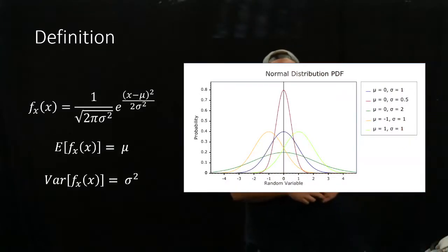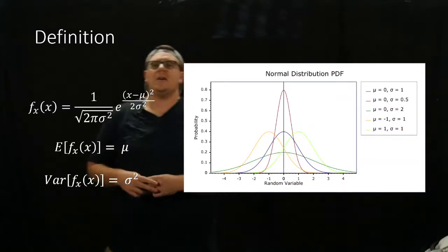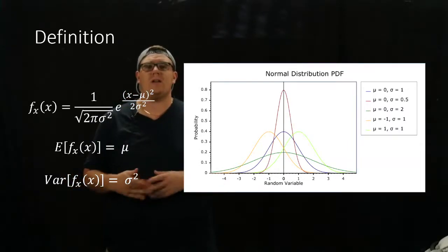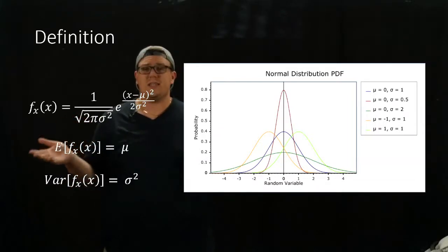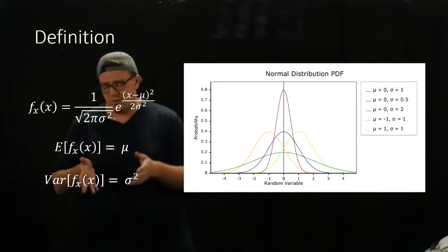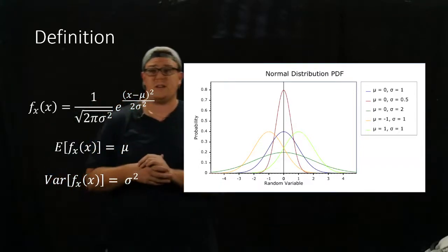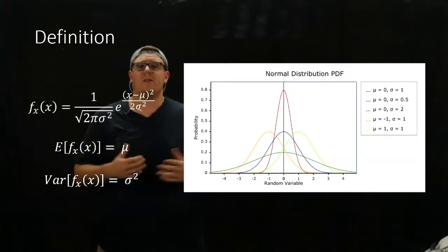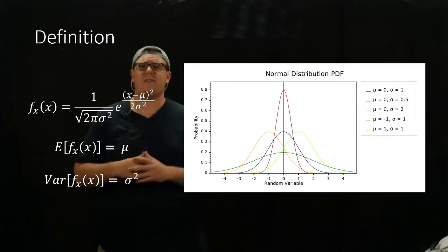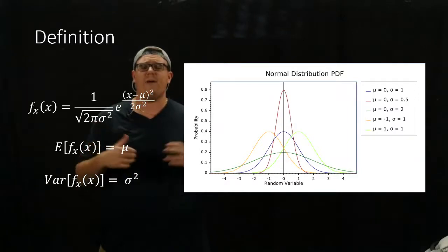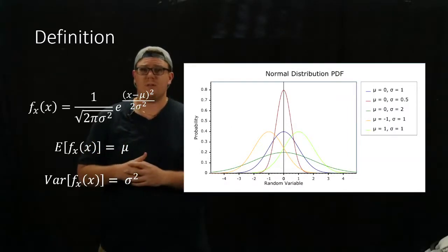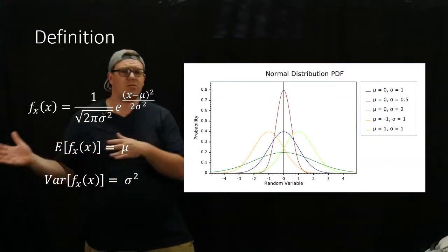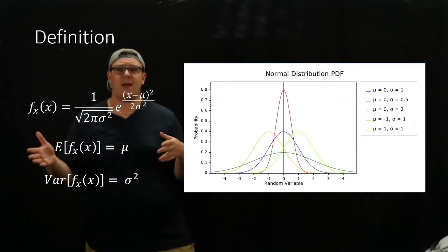This is what a normal distribution PDF looks like. We have a bunch of different ones graphed here. The blue one is the standard normal — it's what we call when it has zero mean and unit variance, or unit standard deviation. Then you have a couple of different ones for different μ's and σ's. Take some time to look at this and see how different μ's and σ's affect this normal distribution. Basically, a larger σ makes it wider, and a different μ shifts the center — shifts the maximum value.